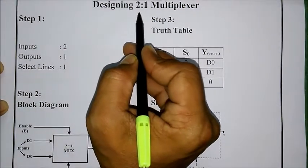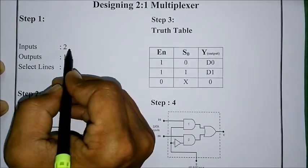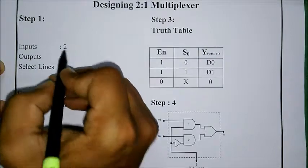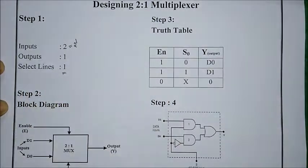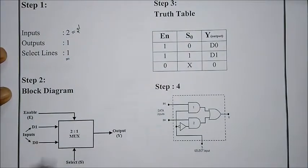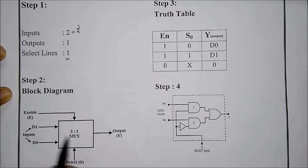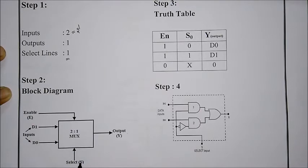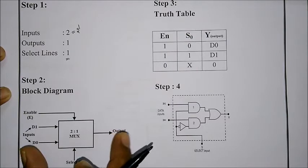A 2-to-1 multiplexer has two inputs and a single output. Since the number of inputs is 2, that is 2^1, there will be only one select line. For the block diagram, we assign the two inputs as d1 and d0, with one enable (which should always be high), a single output line, and one select line.